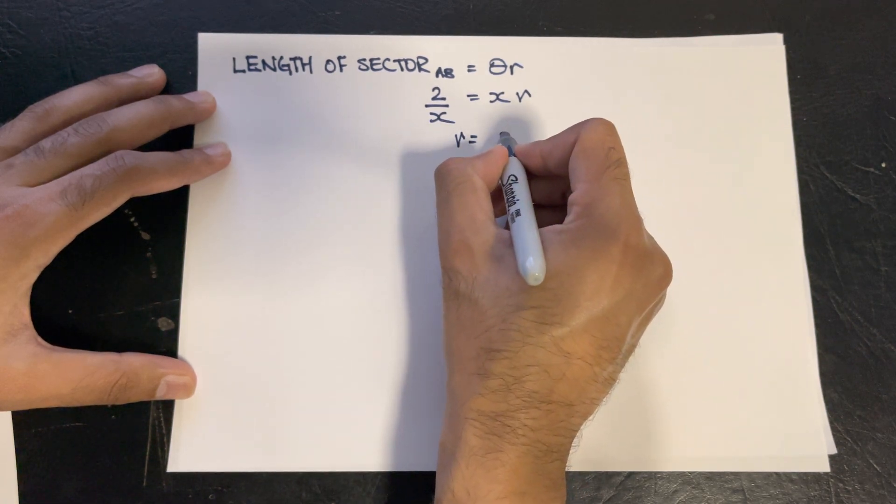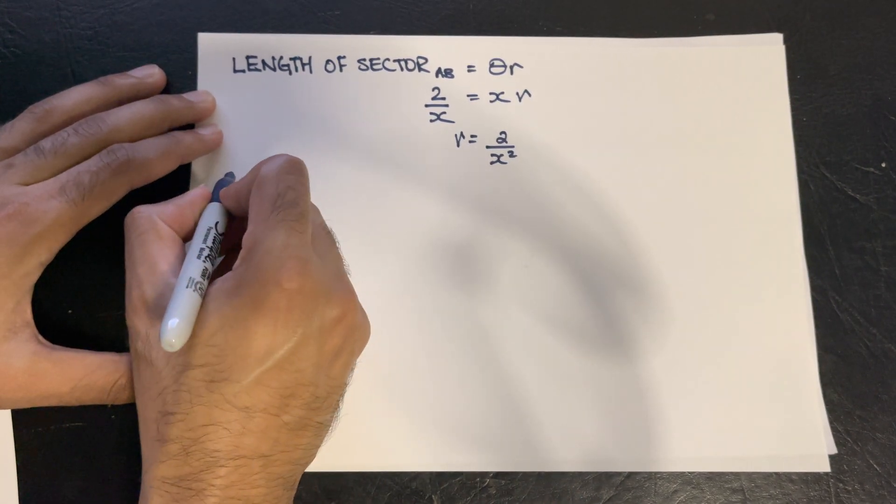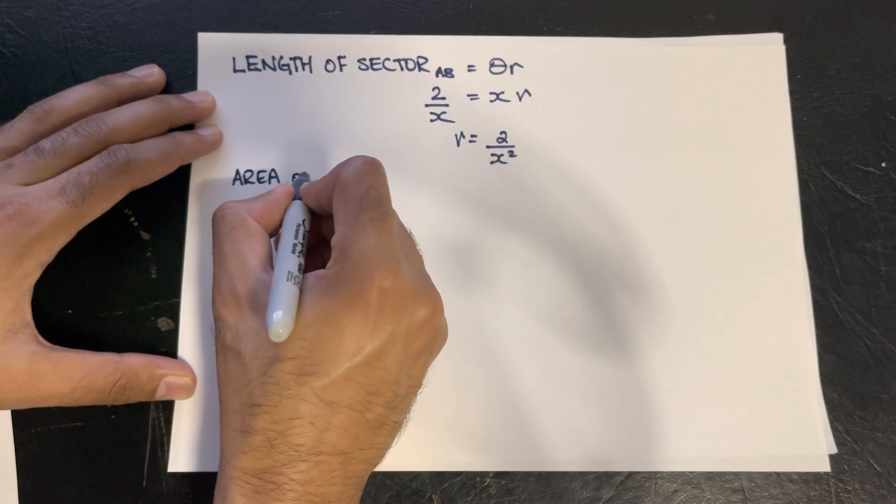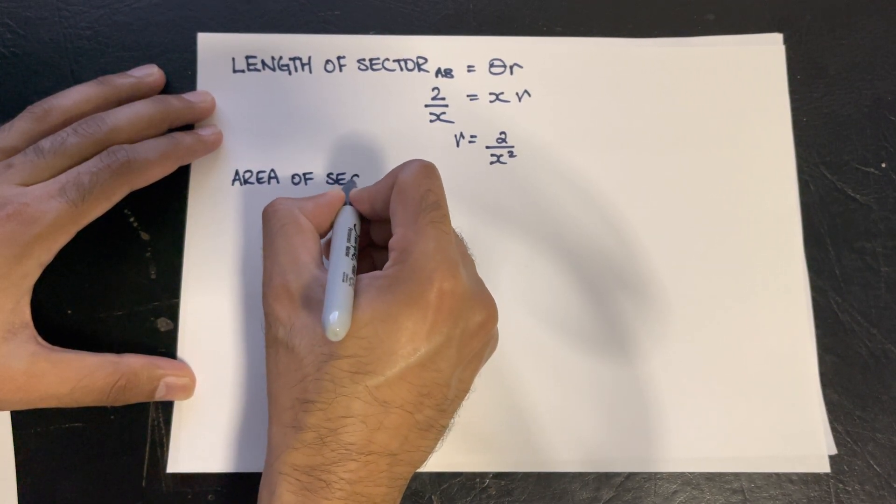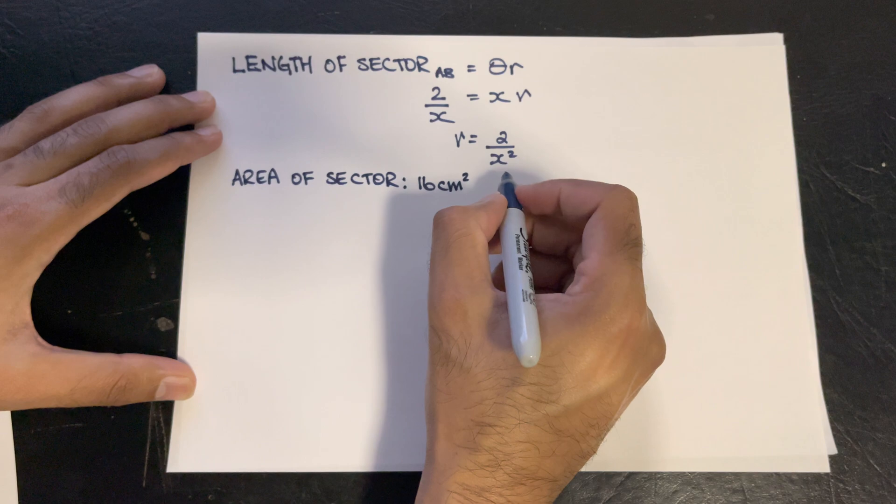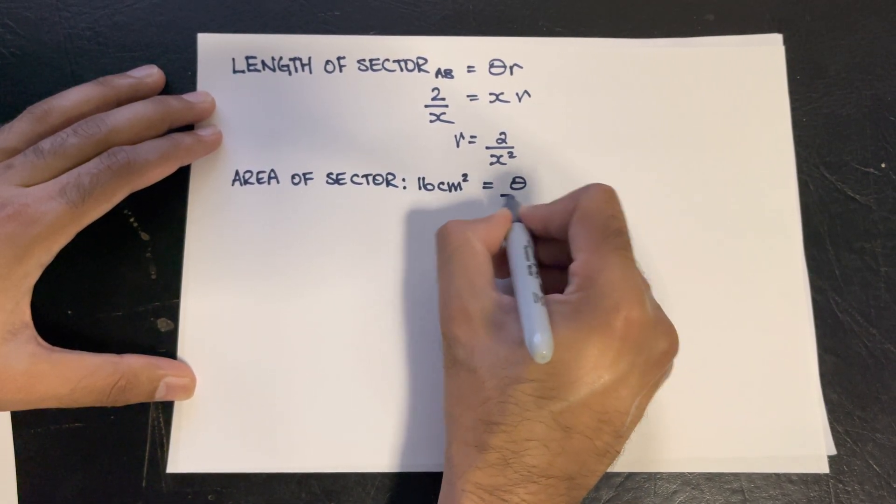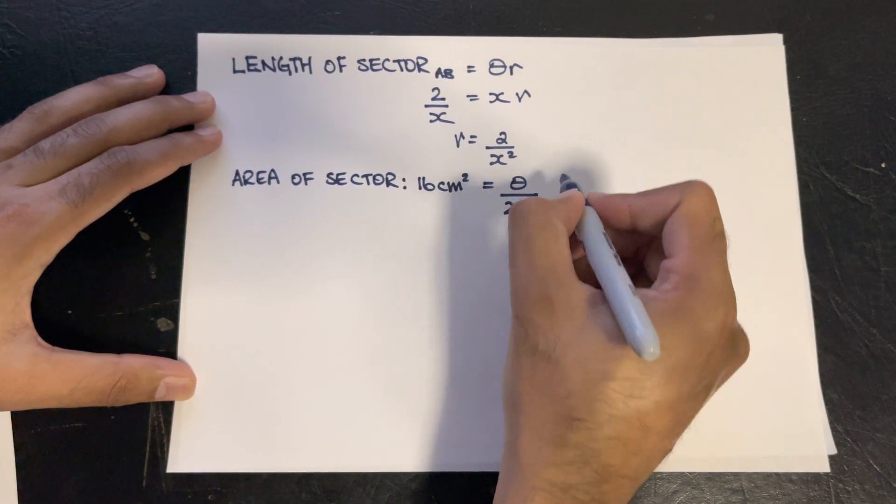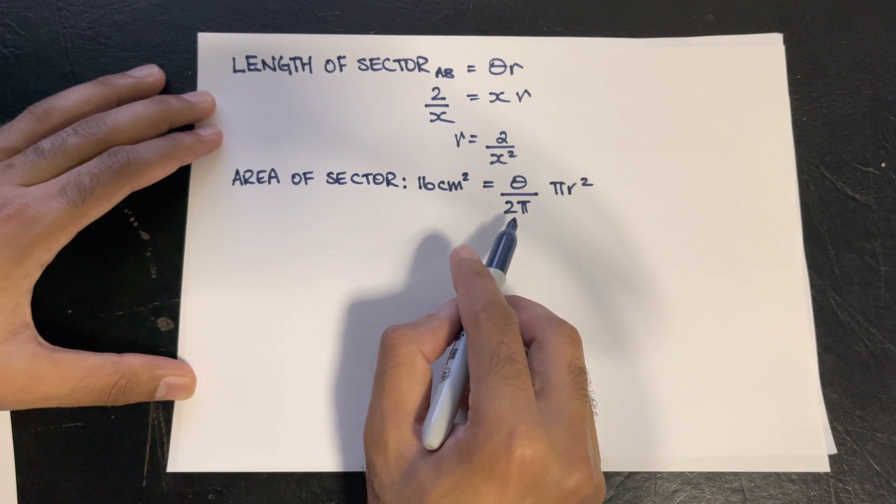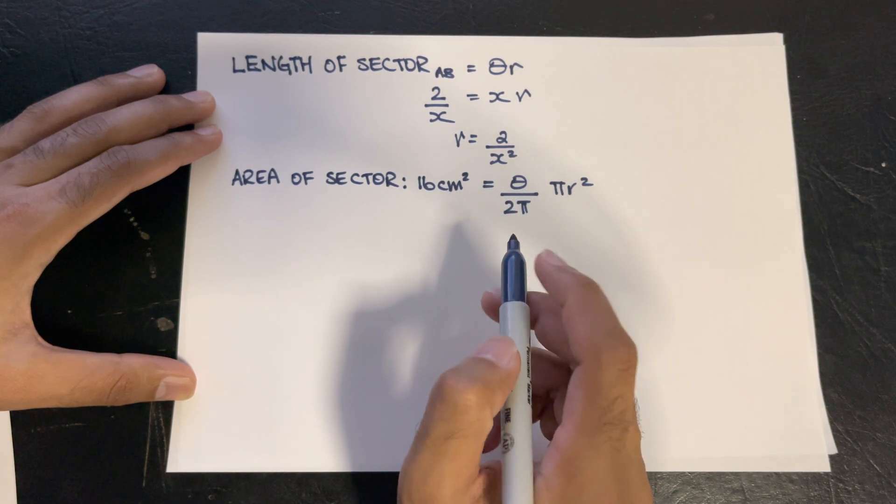The other thing we know is its area of sector, and that's 16 centimeters squared. We know by its definition that the area of the sector is theta over 2 pi, times pi r squared. We're going to plug in the values of what we know. We know the radius, we know the theta angle as x, and the pi's cancel out.